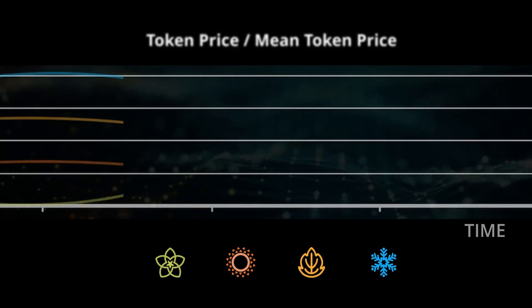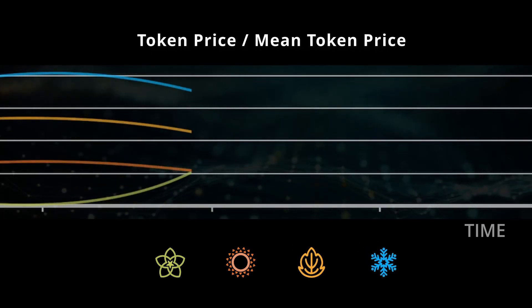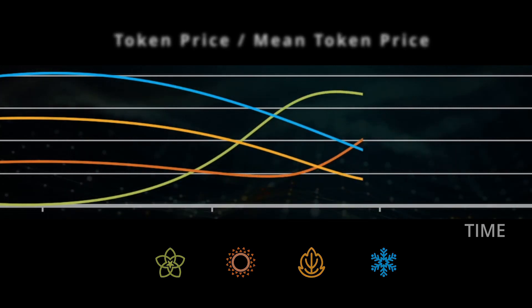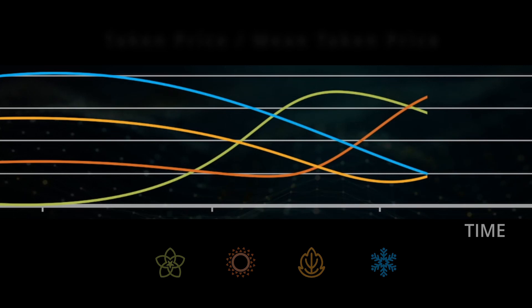Seasonal tokens' price mechanism has been engineered to produce price differences induced by the different rates of production for each token. Let's look at the equilibrium mechanism keeping the rate of production stable.